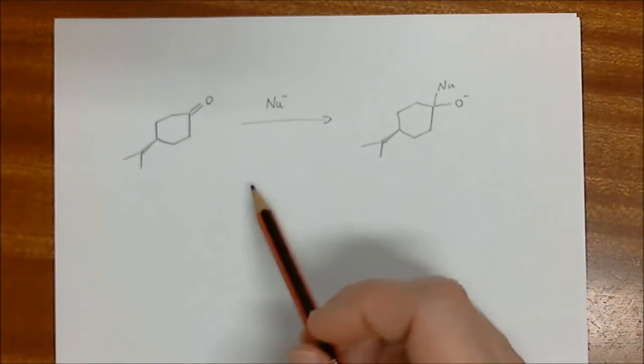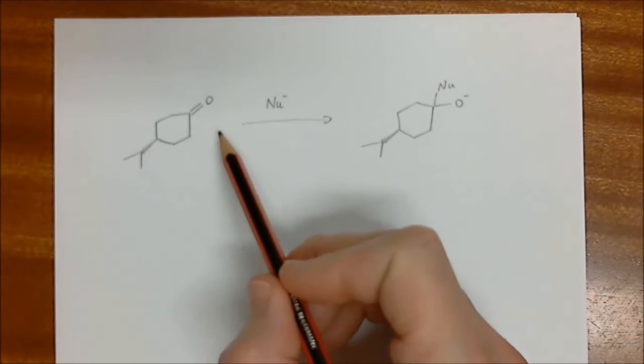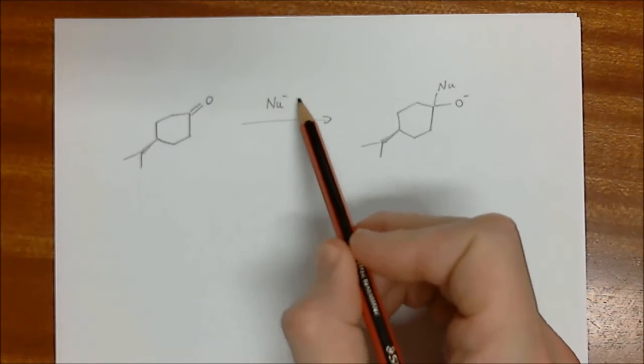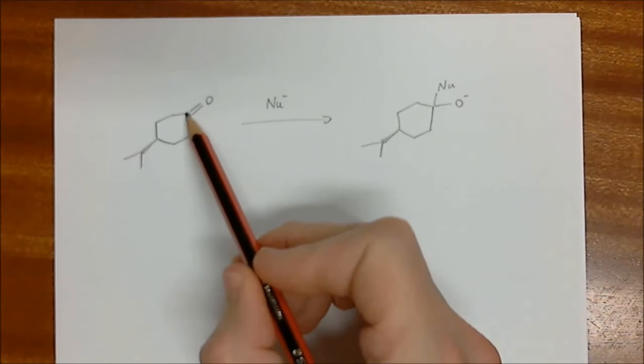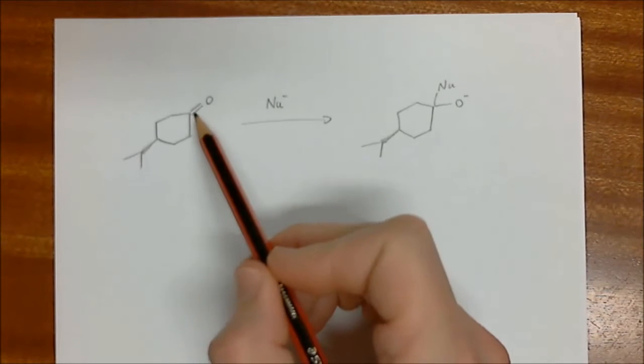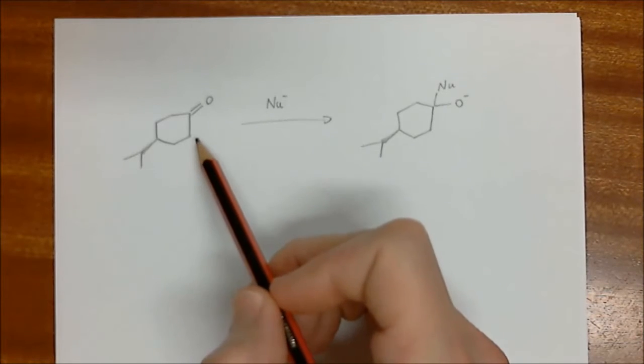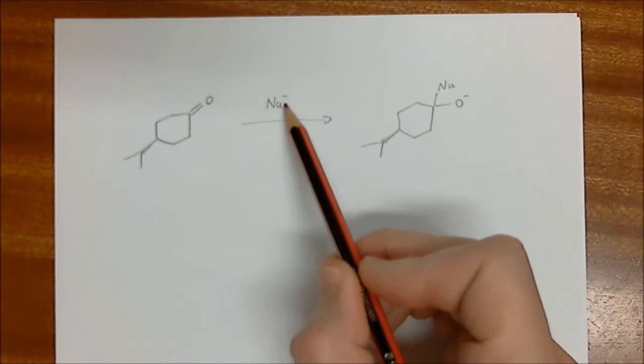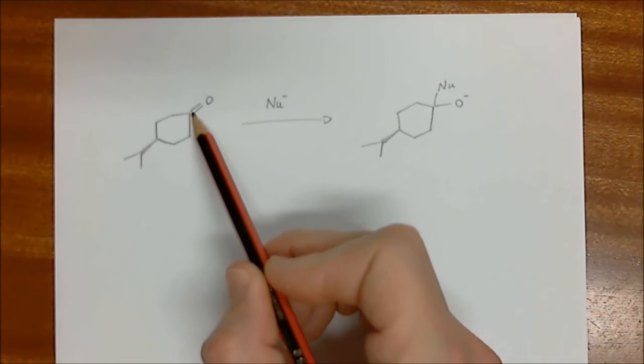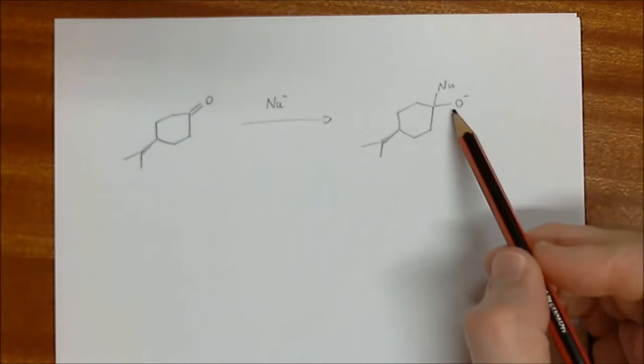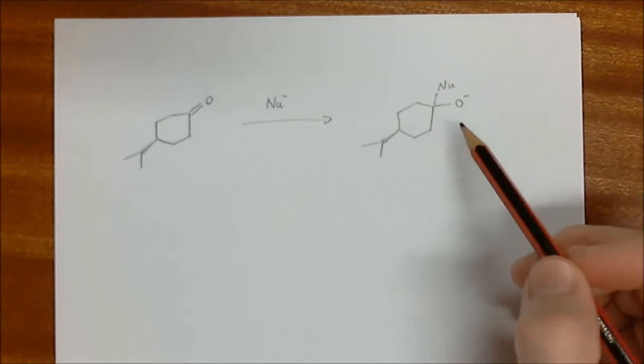I'm going to start off with something very simple here, and that is the reaction of some kind of nucleophile on a ketone on a cyclohexane ring. And the important thing here is whatever this nucleophile is, when it adds to the carbonyl group, the ketone, we're going to get this type of product over here.